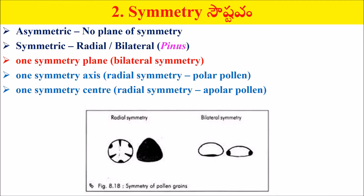Next is Symmetry. Asymmetric pollen grain — no plane of symmetry; you cannot find any plane of symmetry. Symmetry is of two types: radial symmetry and bilateral symmetry. Pinus pollen grain has bilateral symmetry — only one symmetry plane is present, and that is called bilateral symmetry.